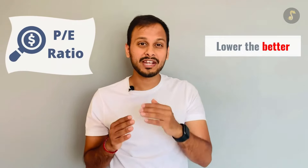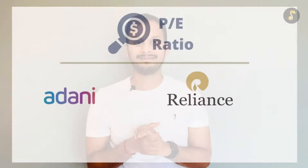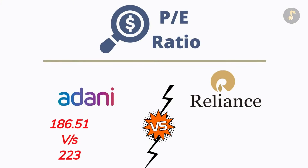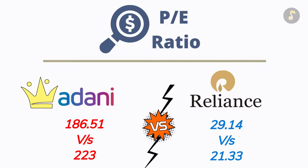Moving on with the last parameter which is price earning ratio. Price earning ratio ka assessment is basically lower the better — matlab jis ka PE ratio kam hai, that stock cheaper hai than its competitors. Lekin Adani and Reliance belong to two different sectors, so we will compare their PEs with their own sector. The PE of Adani Enterprises is 186.51 as against its sectoral PE of 223, whereas that of Reliance is 29.14 as against its industry PE of 21.33. Hence Adani Enterprises turns out to be a better pick under this parameter.